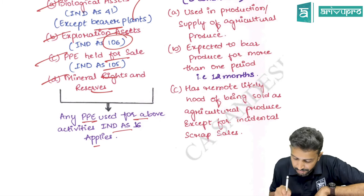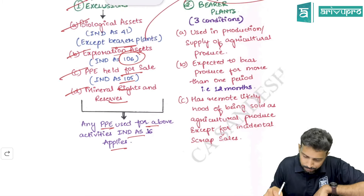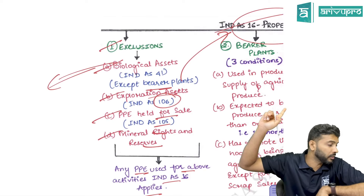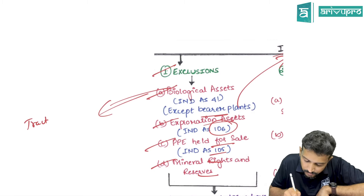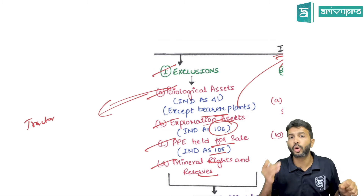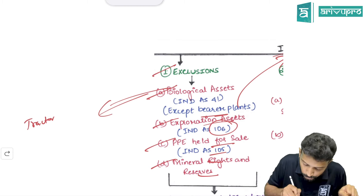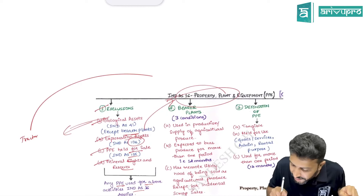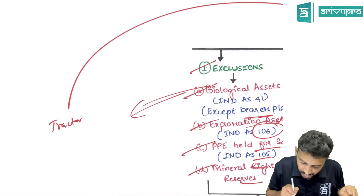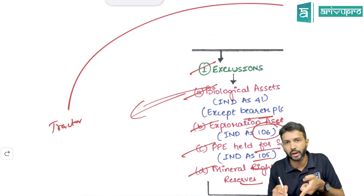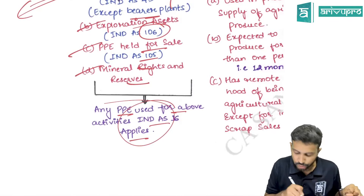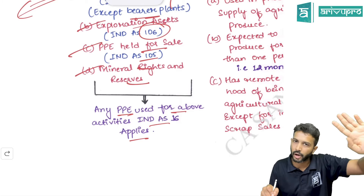One important point: if any PP is used for the above activities, IND AS 16 will still apply. For example, biological assets — living plants and animals — fall under IND AS 41, but if you have a tractor used in the agricultural process to grow a crop, IND AS 16 applies to the tractor. For the crop, IND AS 41 applies. Any other PP used in those activities is still governed by IND AS 16.